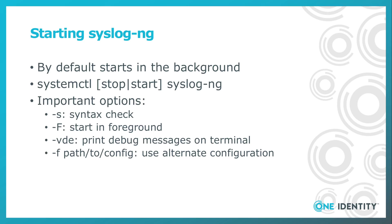When working on your syslog-ng configuration, you will use syslog-ng directly. Here are some command line options we will use during the tutorial. '-s' does syntax checking and helps you spot configuration errors before a configuration goes live — note it cannot find all problems, like a typo in a source name. '-F' starts syslog-ng in the foreground. '-v', '-d', '-e' provides extra information on the terminal about what syslog-ng is doing.